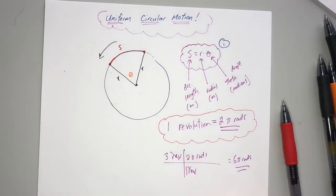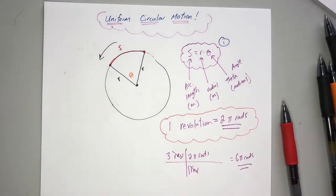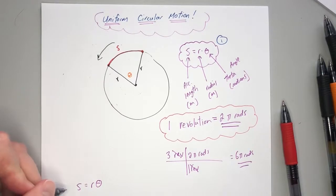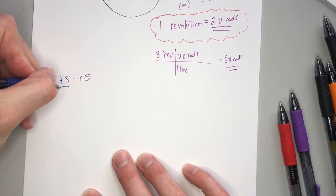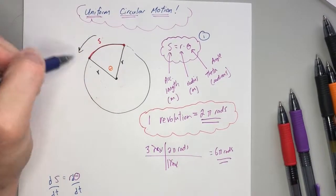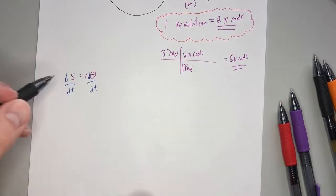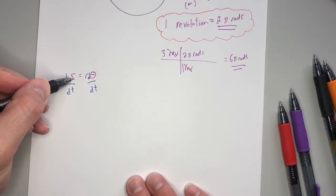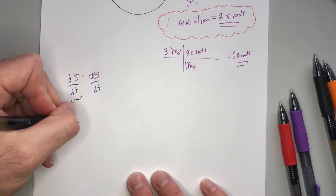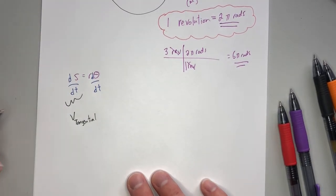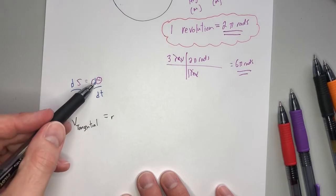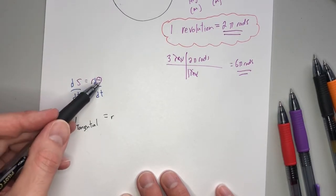We'll call s = rθ Equation 1. Now let's take it up a notch by taking the derivative of both sides with respect to time. The derivative of arc length with respect to time is meters per second — that is your tangential velocity, vt, also called tangential or linear velocity. The r is a constant so it comes along for the ride, giving us vt = r times (dθ/dt).